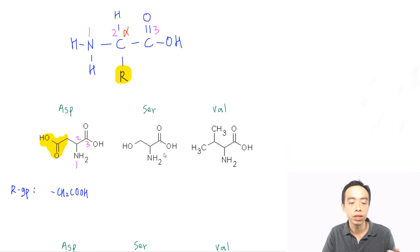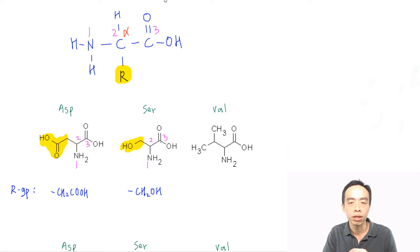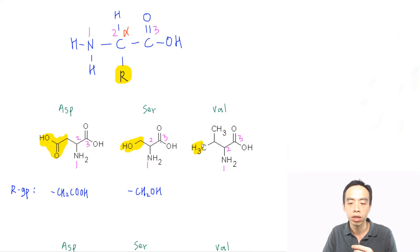For SER, it is essentially the same. Position 1 is my amine group, position 2 is the carbon with the R group, and position 3 is my acid group. So my R group sticking out of the second carbon is CH2-OH. For VAL, position 1 is my amine, position 2 is the carbon with the R group, position 3 is my acid group. The group sticking out of the second carbon is CH(CH3)2, so the R group is a CH attached to two methyl groups.